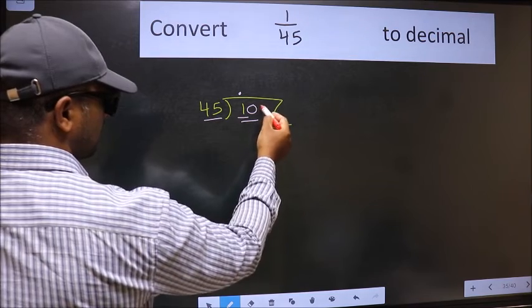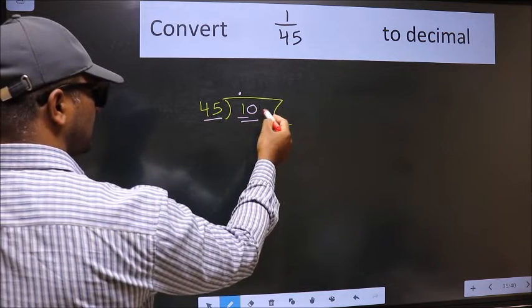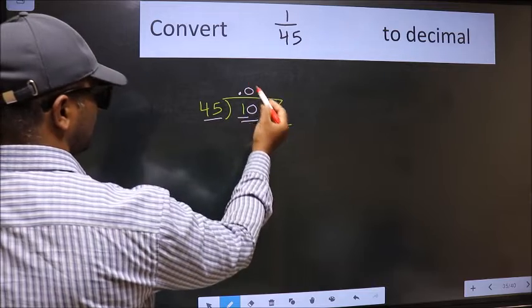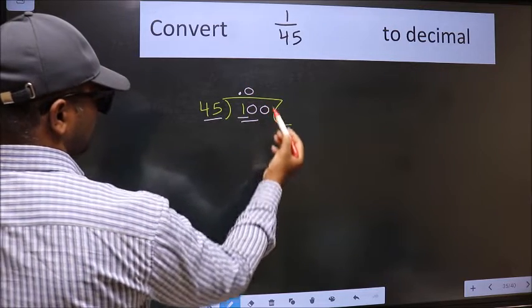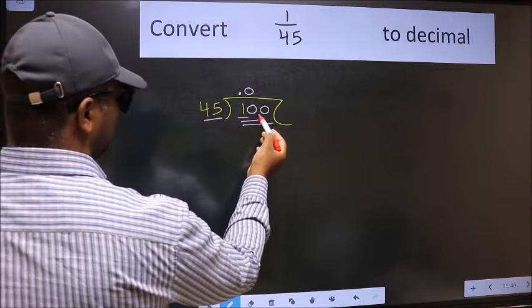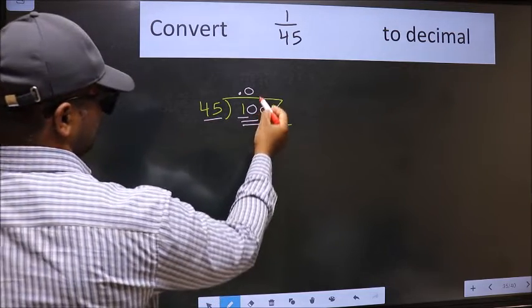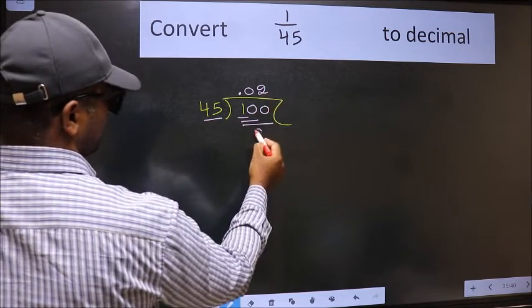So we should take one more 0 here, and the rule to get 0 here is put 0 here, then you can get one more 0 here. So 100, a number close to 100 in 45 table is 45 to 90.